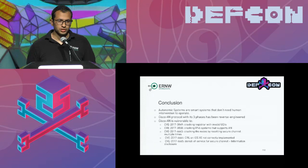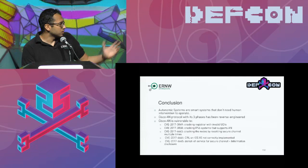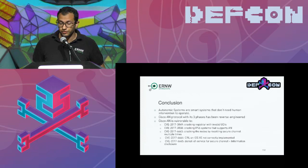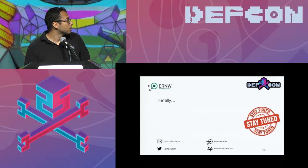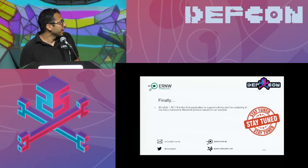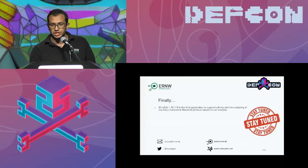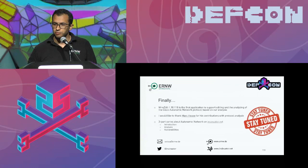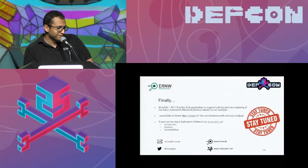To conclude: we analyzed the autonomic network's three phases, reverse engineered the protocol, and introduced five new vulnerabilities — one of which crashes devices just by knowing their IPv6 address. If you'd like to get started, there are three blog posts on insinuator.net. Wire Edit is the first application to use our protocol analysis. You can download the CSR1000V image if you don't have Cisco gear. Thanks to Mark Hoiser for protocol analysis help, and thank you Wojtek for attacking everything I have.